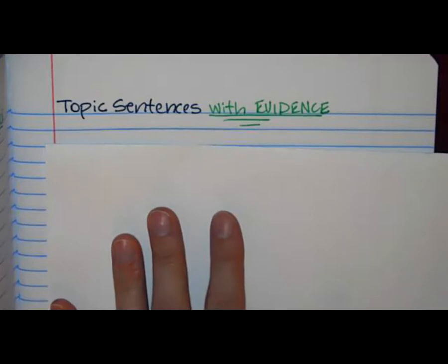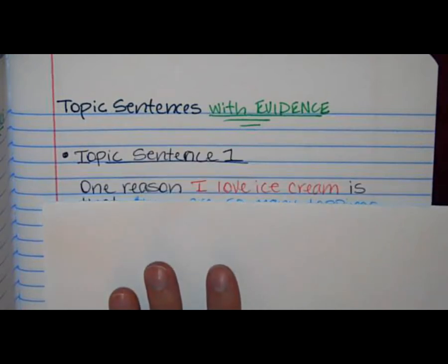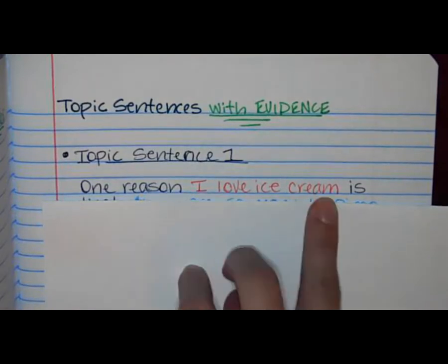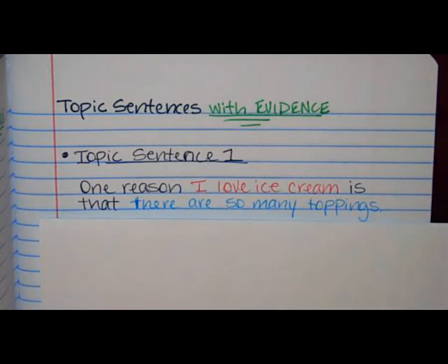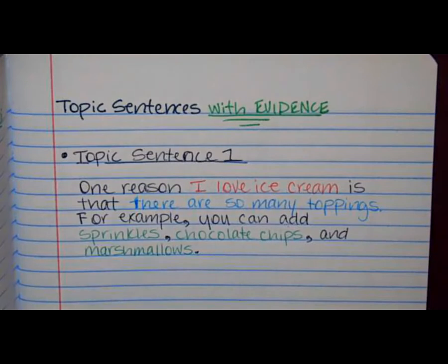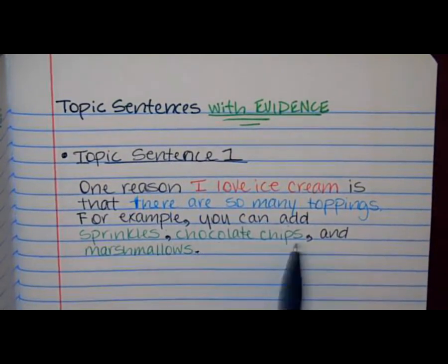Let's begin writing our topic sentences. These sentences will be the first sentences in your paragraphs two, three, and four. For the first topic sentence, you're going to say — and remember, we write our statement in red — 'One reason I love ice cream is,' and then in blue because it's our first reason: 'there are so many toppings.' We then list the pieces of evidence written in green from our notes: sprinkles, chocolate chips, and marshmallows. We write our transition phrase 'for example,' and then: 'you can add sprinkles, chocolate chips, and marshmallows.'